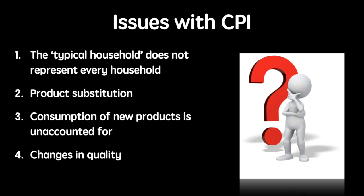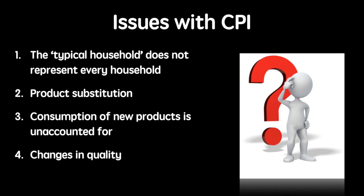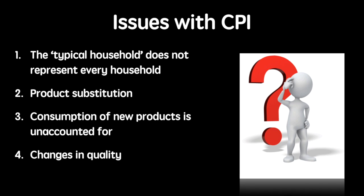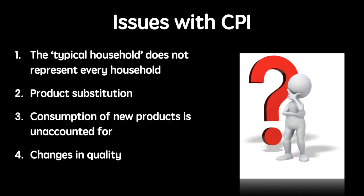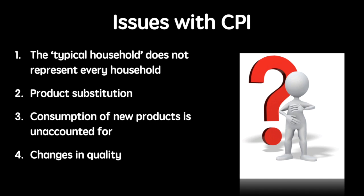Fourth, changes in quality. If certain goods increase in price but also increase in their lifetime use, it is not accounted for in inflation. If products bought this year last longer, then their per-use price could work out lower than the previous year's products' per-use price. The CPI does not account for this.